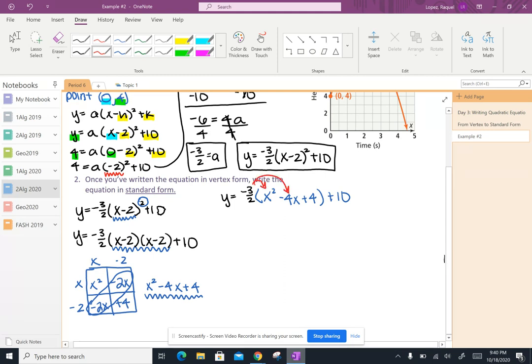I can distribute that negative 3 halves to everything inside my parentheses.